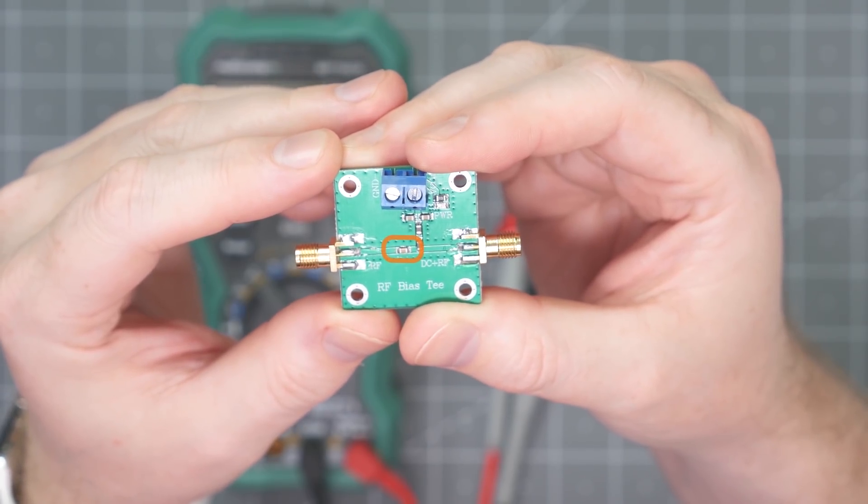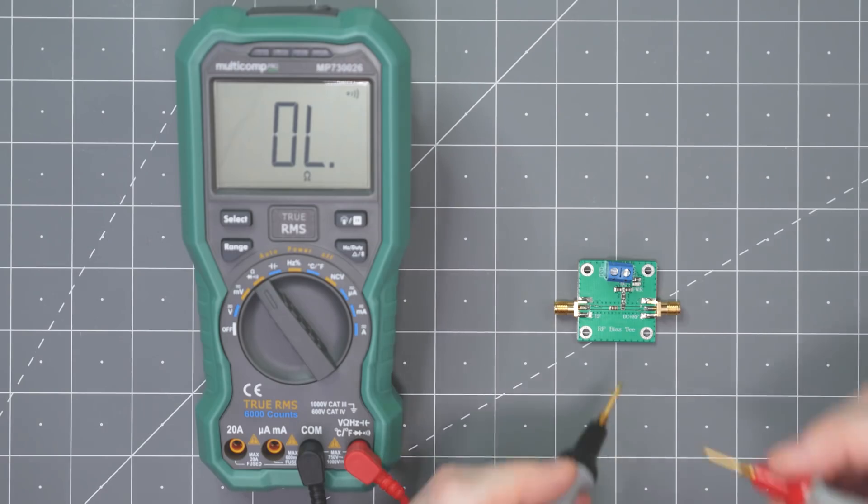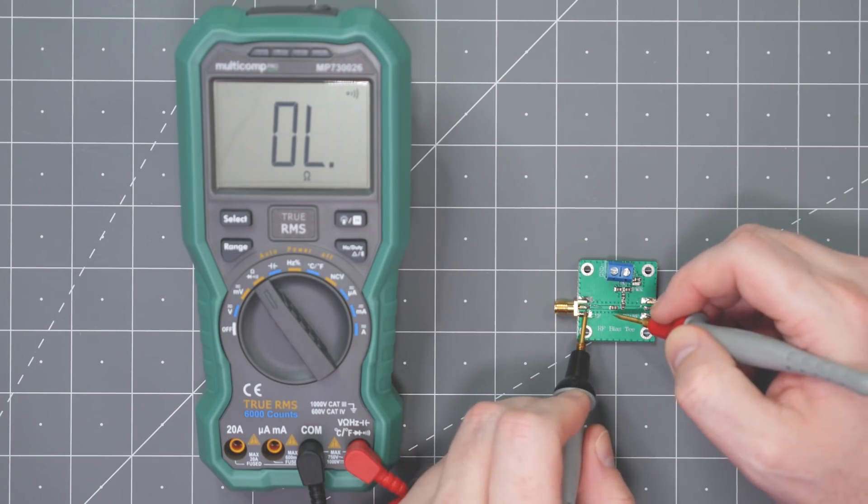Looking close at the board, there is a capacitor in the middle of the trace. From each signal pin to the capacitor terminal, there is a short.